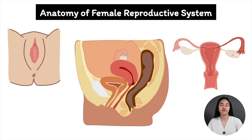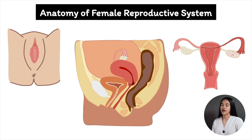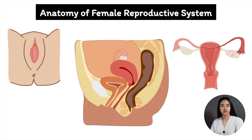In this video we're going to cover the anatomy of the female reproductive system, including the external female genitalia and internal female genitalia. Here's the anatomical organization of the female reproductive system. The female reproductive tract is located within the pelvis, and these structures can be referred to as the external or internal female genitalia.